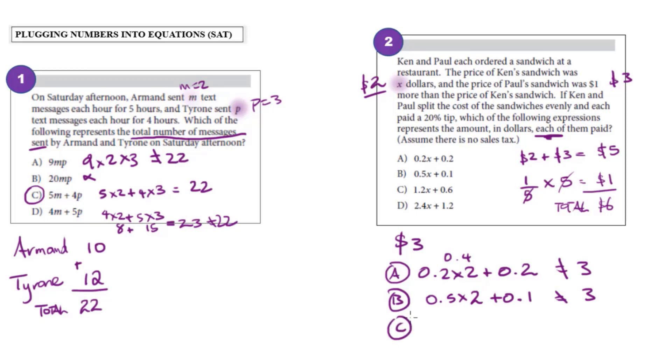What about C? C is 1.2 times two plus 0.6. 1.2 times two, that would be well, two times one is two, two times 0.2 is 0.4. So that would be 2.4 plus 0.6, which would give me 3.0 or three.